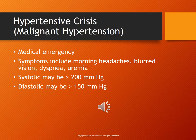Malignant hypertension, also known as hypertensive crisis, is a medical emergency. It is a severe type of elevated blood pressure that rapidly progresses. Symptoms include morning headaches, blurred vision, and dyspnea or symptoms of uremia. The hypertensive crisis criteria is a systolic blood pressure greater than 200 and a diastolic greater than 150, or greater than 130 when there are pre-existing complications. A patient in hypertensive crisis may experience kidney failure, left ventricular heart failure, and stroke unless treated promptly.